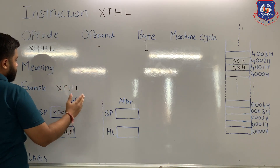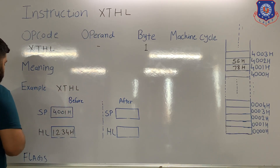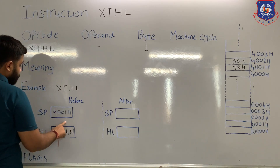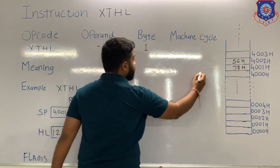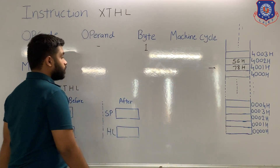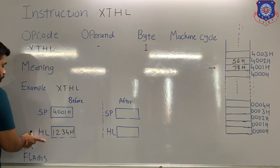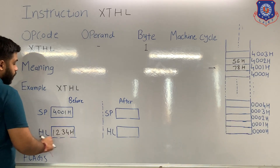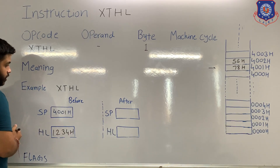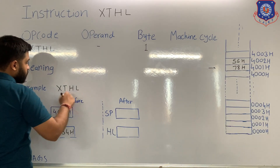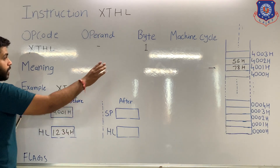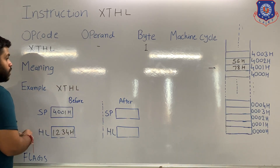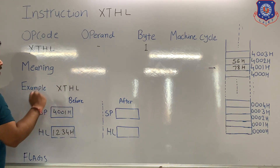Let's see one example. Suppose before the execution, the content of the stack pointer is 4001H, so right now the stack pointer is pointing at 4001H. The content of the HL pair is 1234H. So when this instruction is executed, the data present in the HL pair will be exchanged with the stack.